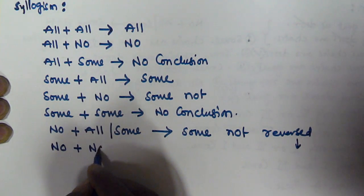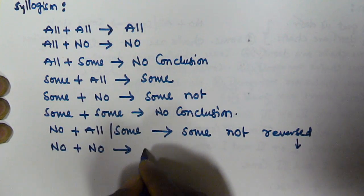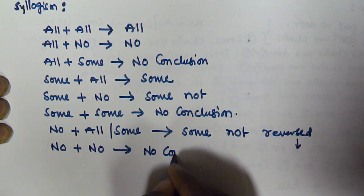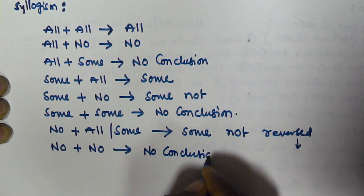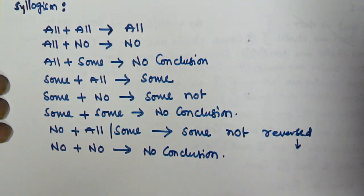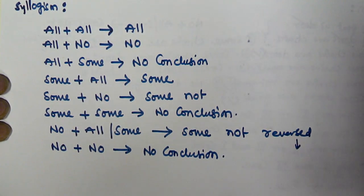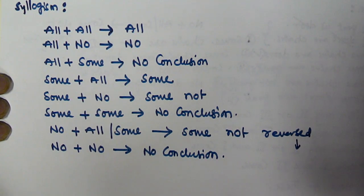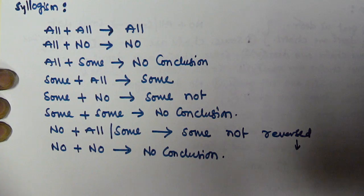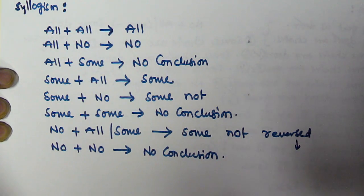When the first statement starts with 'no' and the second also starts with 'no', there is no conclusion at all. These are the rules explained in the previous video, so whenever you are solving syllogism problems, please remember all these rules — it will make it very easy.